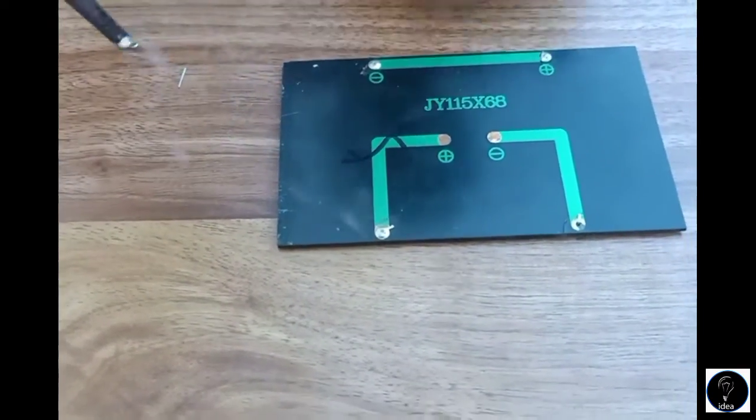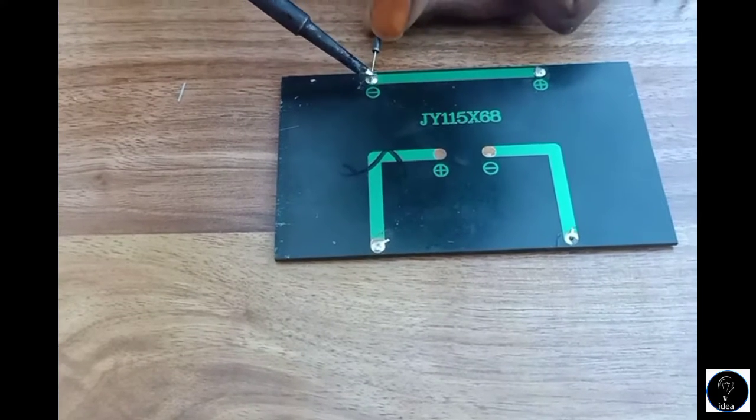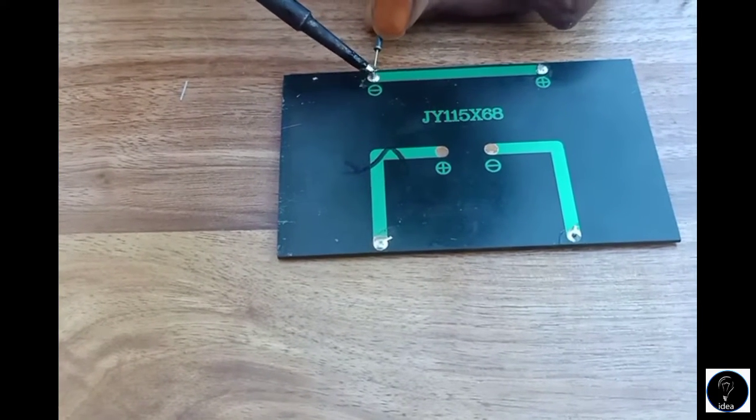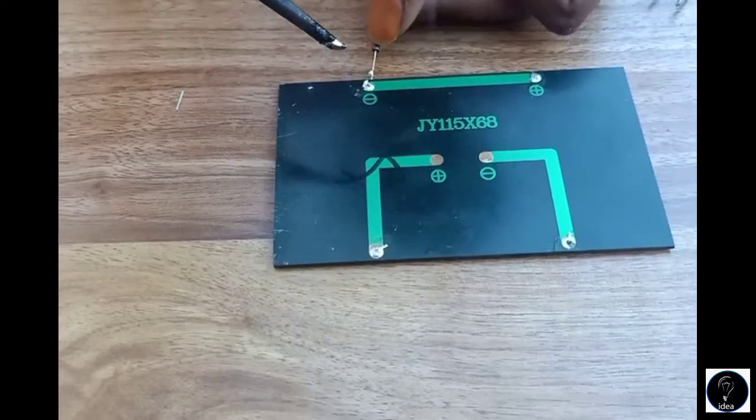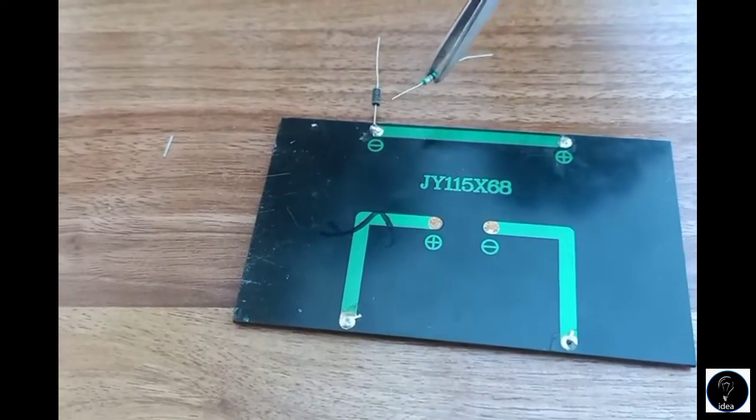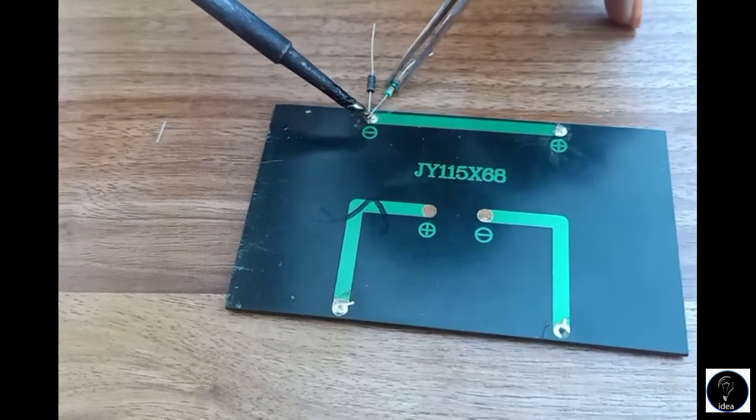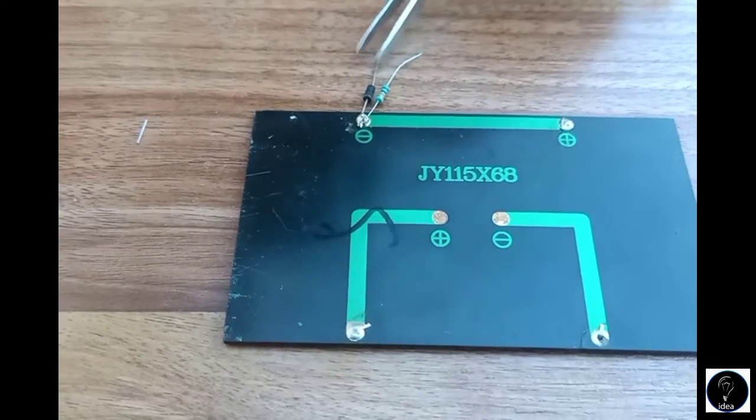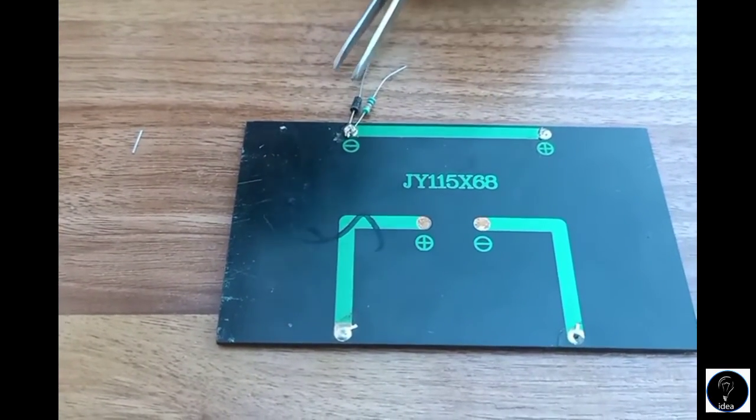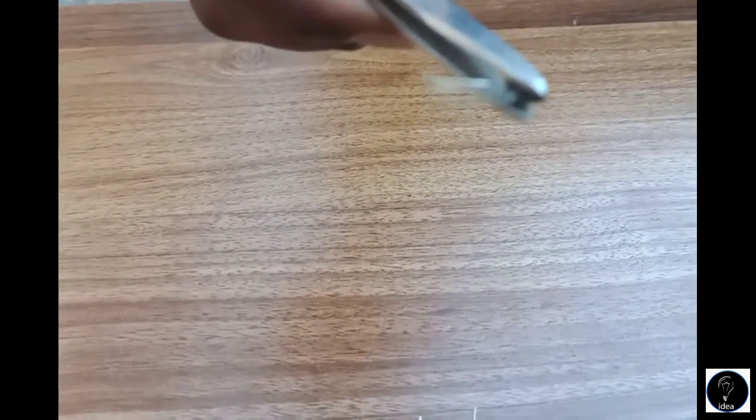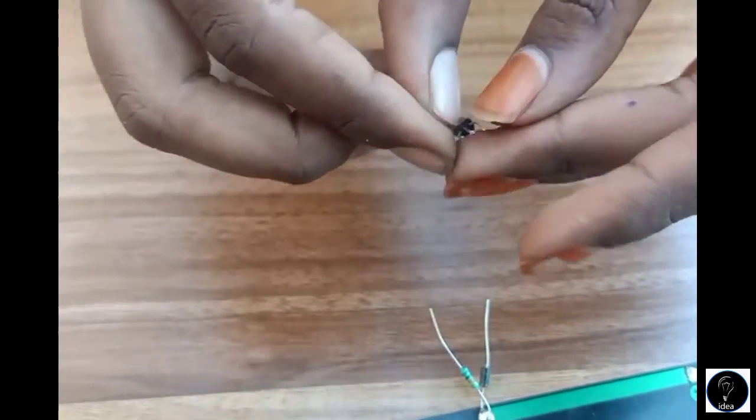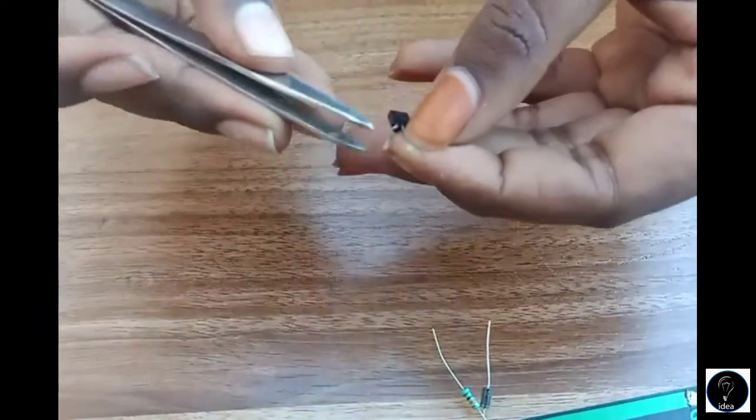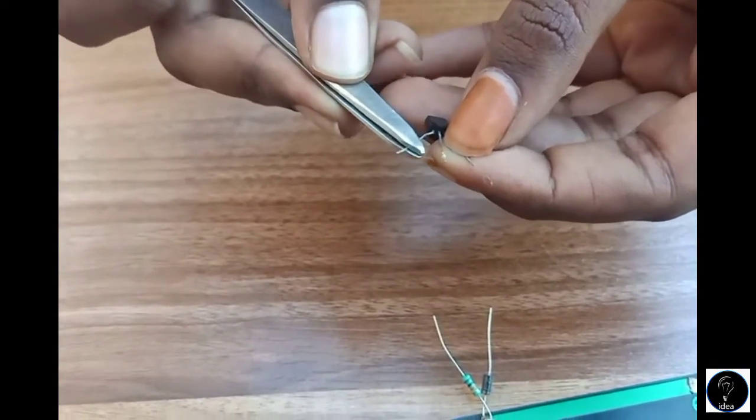I'm going to the diode at the minus case now. I'm going to write 10k resistor because it's not only that. I'm going to say that I am using a diode and I have two transistors. In the description of this video, I will show you the components.